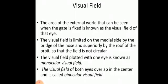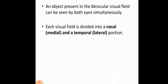The visual field is the area of the external world that can be seen when your gaze is fixed at a particular point. The visual field is limited on the medial side by the bridge of the nose and superiorly by the roof of the orbit, so the field is not circular. The visual field plotted with one eye is known as the monocular field of vision, and the visual field of both eyes overlaps in the center, which is called the binocular visual field.